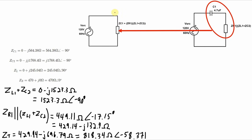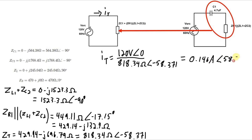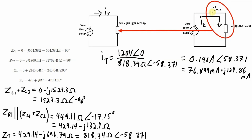Now that we have the total impedance calculated, we can calculate the total current. Working backwards from this third equivalent circuit to the second equivalent circuit, IT goes through both of these components. So we can use that IT value to calculate the voltage across capacitor 1, as well as the voltage across this combination of components.